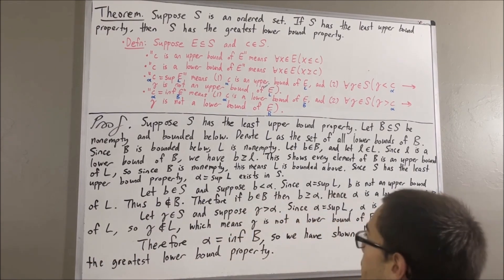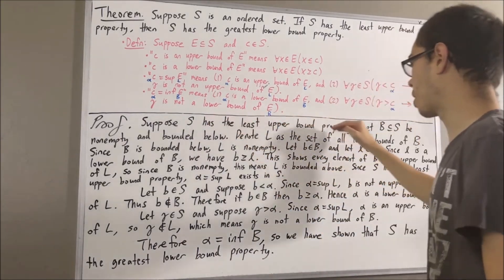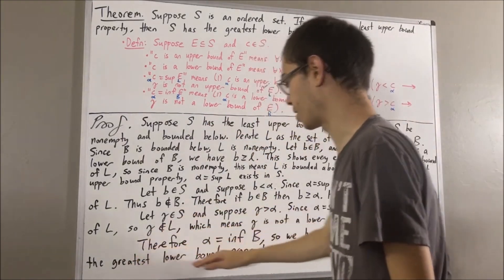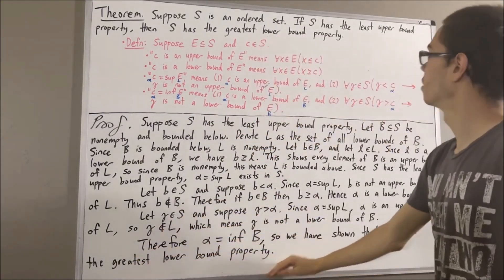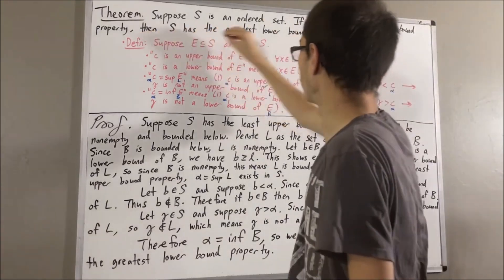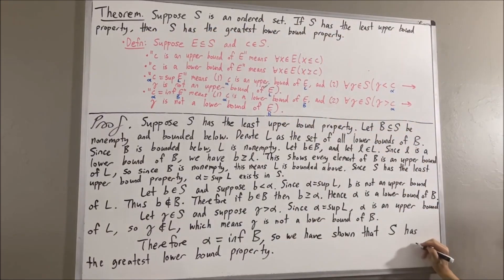And therefore, if S has the least upper bound property, then S has the greatest lower bound property. And that is exactly what we wanted to prove. So this completes the proof.